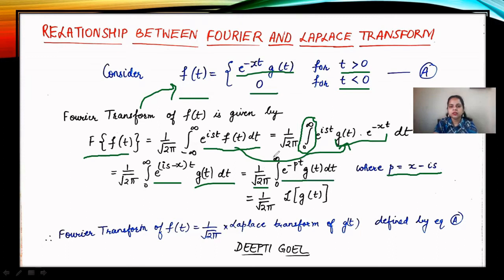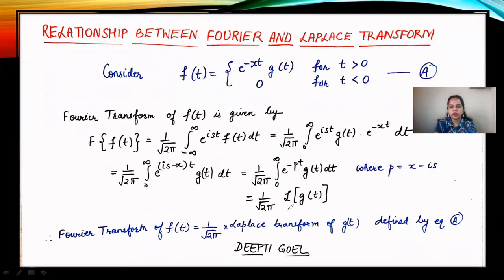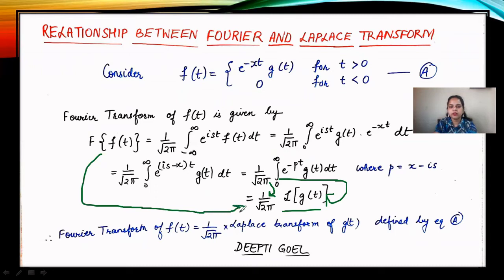We know that this is nothing but the definition of the Laplace transform. So we can write it as 1 by root 2 pi times the Laplace transform of g(t), where the 1 by root 2 pi was coming from our derivation. The left-hand side is the Fourier transform of f(t) and the right-hand side consists of the Laplace transform of g(t), where f(t) and g(t) are connected by the expression f(t) = e to the power minus xt times g(t) for t greater than 0, and 0 for t less than 0.